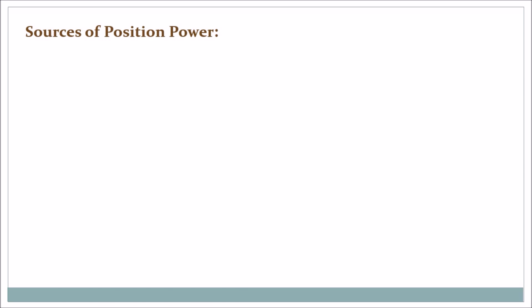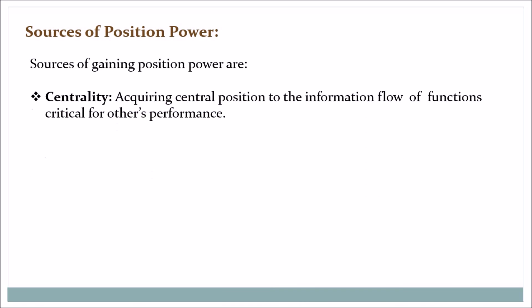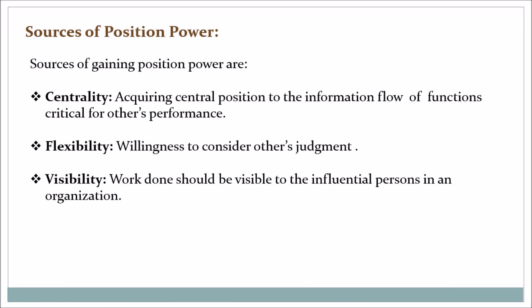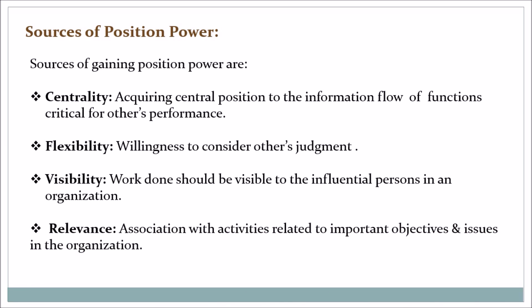Sources of position power. Sources of gaining position power are: Centrality — acquiring a central position in the information flow of functions critical for others' performance. Flexibility — willingness to consider others' judgment. Visibility — work done should be visible to influential persons in the organization. Relevance — association with activities related to important objectives and issues in the organization.